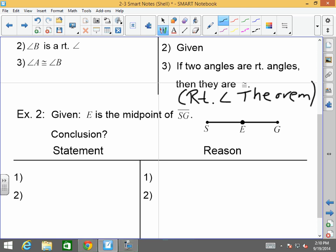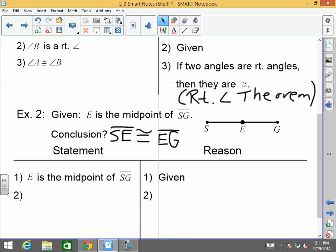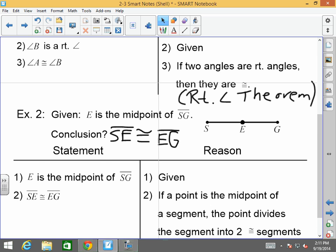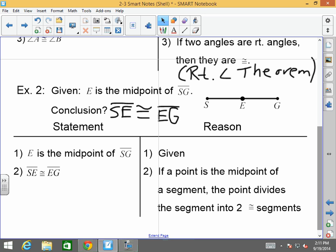How about this one? E is the midpoint of SG. What do you think we can conclude from here? He's saying that segment SE is congruent to segment EG. I think that's a very well thought out conclusion. Absolutely. Why? What would my first statement be? E is the midpoint of SG. That's given. If you know the definition of midpoint, you know that it cuts a segment into two perfect halves. So if it cuts a segment into two perfect halves, then boom, you can immediately say segment SE is congruent to segment EG because if a point is the midpoint of a segment, the point divides the segment into two congruent segments. Or I could just put definition of midpoint.